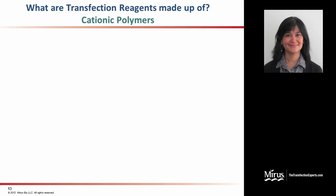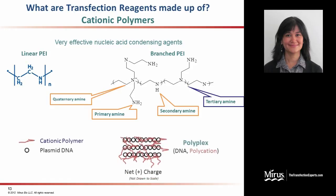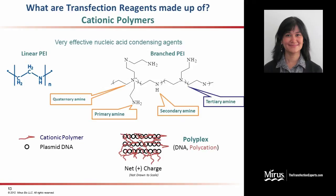A very different class of components for transfection reagents than the already discussed lipids are cationic polymers. These compounds are very effective nucleic acid condensing agents because of their polymeric nature. An example is polyethylenimine (PEI), which can be linear or branched, as shown here. These polymers typically provide a lot of positively charged side groups — in this case amine groups — that can interact efficiently with the negative backbone of DNA and form complexes called polyplexes.